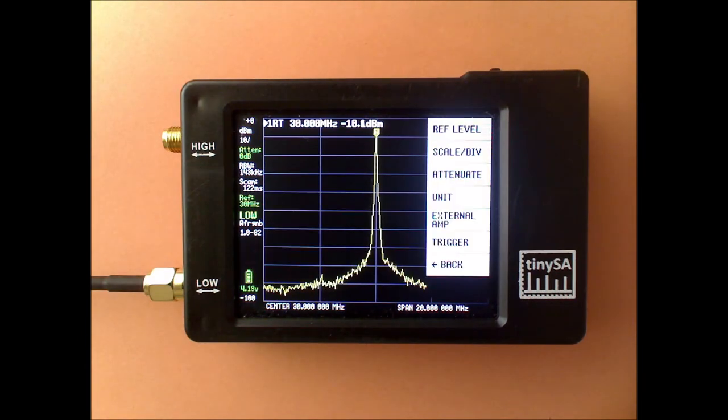Next to the REF level you can also set the scale per division. By default this is set to 10 as you can see here at the left side of the screen.